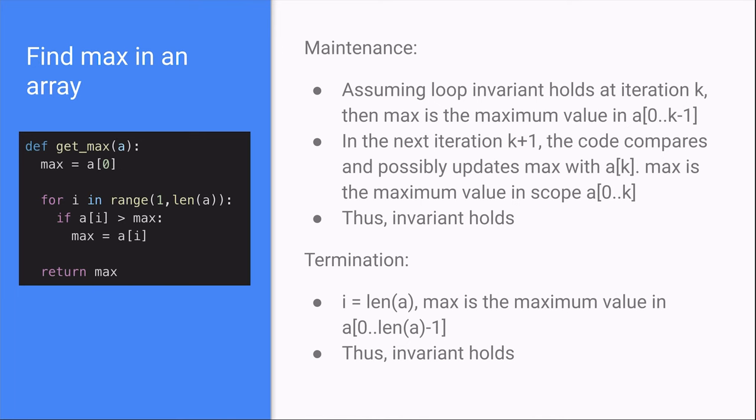At termination, i is equal to the length of a. Max is the maximum value in a from index 0 to index length of a minus 1, which covers the entire array. Thus, the loop invariant holds.